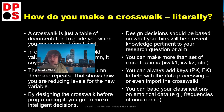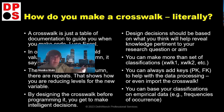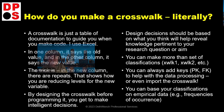You can always add primary keys and foreign keys to help with data processing. For example, if you had a list of cities in Massachusetts, you could create a county crosswalk variable that can be a foreign key to other county data. You can also base your classifications on empirical data like frequencies of occurrence — like crosswalking down to four categories because there were three big categories and a whole bunch of others. Let me show you an example.